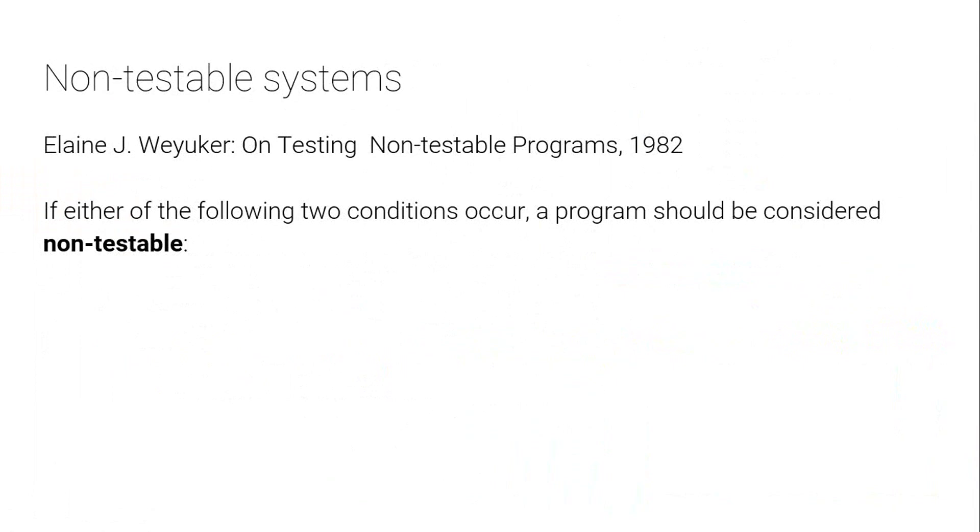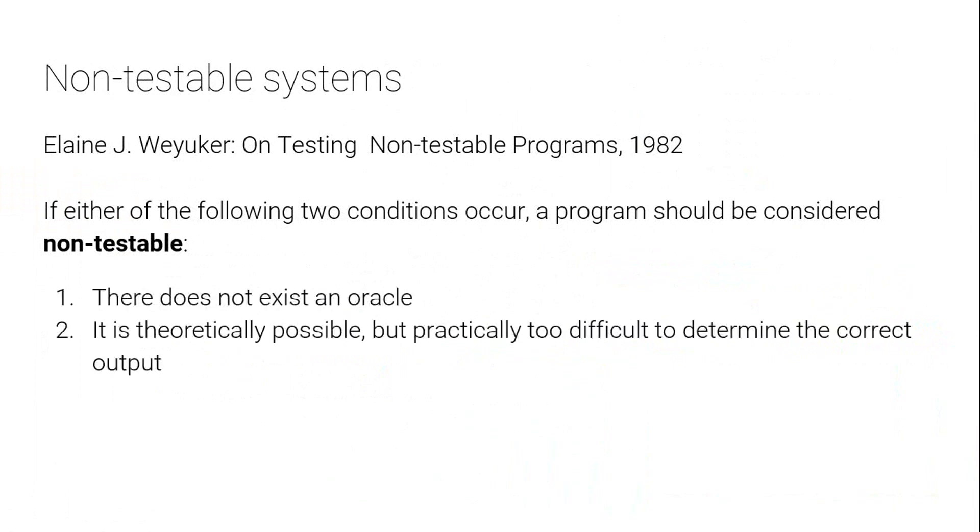There cannot be a compiler oracle because the language is not precisely defined. And in 1982, Elaine Weicker coined the term non-testable for systems where either there doesn't exist an oracle or it's theoretically possible but practically too difficult to construct an oracle. And I would argue that things like operating systems, hypervisors, machine learning algorithms, compilers are examples of non-testable systems, especially in the case of compilers for loosely defined programming languages like OpenGL, or for really complicated programming languages like C++ where there is a specification, but it's in a book that thick and it's just written in prose, albeit carefully constructed prose, not super formal prose.